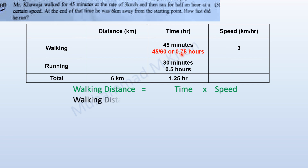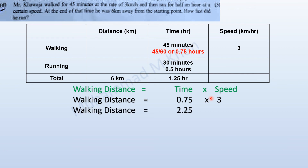Using the distance formula (distance = speed × time): Mr. Khaja walked for 0.75 hours at 3 km/h, so the distance covered walking is 0.75 × 3 = 2.25 kilometers. Since the total distance is 6 kilometers, the distance covered by running is 6 − 2.25 = 3.75 kilometers.